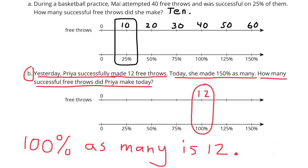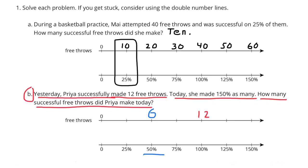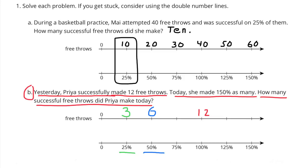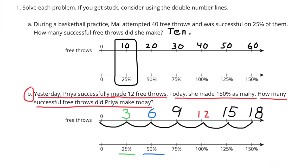I want to fill out this double number line. I can do that by cutting the 12 in half to get 6, as I cut 100% in half to get 50%. So I know that 50% is equal to 6. Next, I can cut 50% in half to get 25%, as I cut the 6 in half to get 3. So now I know they're counting by 3s: 0, 3, 6, 9, 12, 15, and 18.